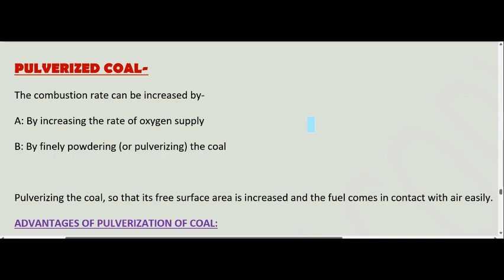We learned about the classification of coal on the basis of their rank in the last class. The first one was wood, which was the parent material, then peat, then lignite, then bituminous coal, and the last one and the very good quality of coal, that is anthracite.